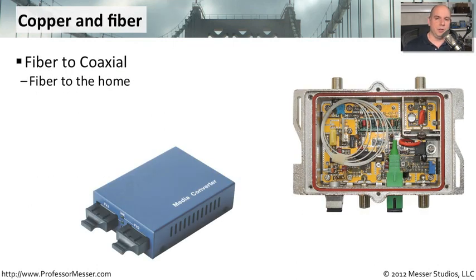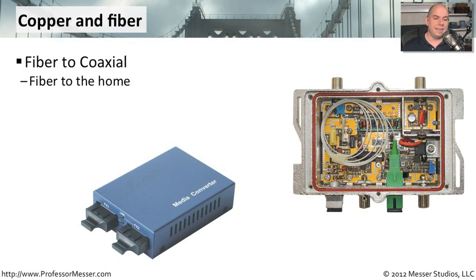An increasingly common media conversion is taking place in our homes. Cable providers used to bring a coax cable right into your house to plug into your television, but as their business has expanded to provide telephone, cable television, and internet, they're now bringing fiber right up to your house. On the side of your home is a conversion box that takes the signal from the fiber and converts it to a copper coax connection that all other devices in your home are accustomed to using — providing amazing amounts of bandwidth. This technology, although emerging, is rapidly growing.